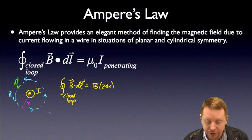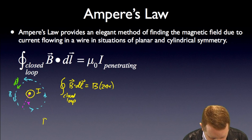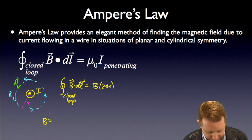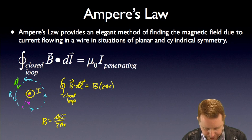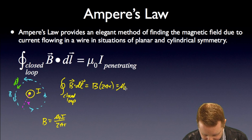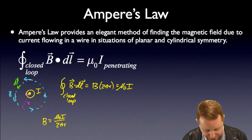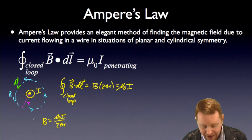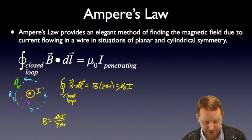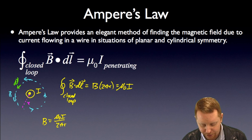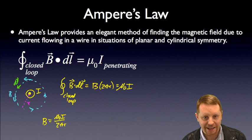The integral over the closed loop of B dotted with dl equals, well in this case because we have a circle, that's pretty easy to see that's going to be B times 2πr, just the distance around the circle, because B and dl are always in the same direction anywhere around that wire because of that symmetry. From our Biot-Savart calculations, we know that B = μ₀I/2πr. So B times 2πr must be μ₀I, and I is the current that penetrates that loop.